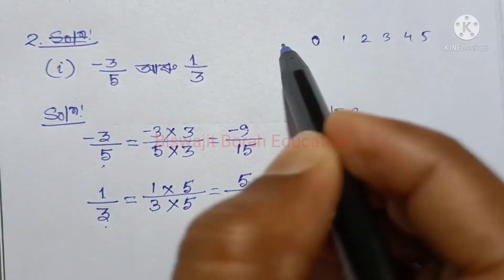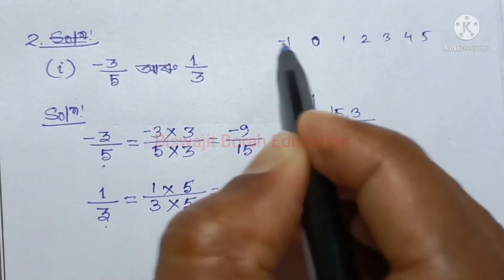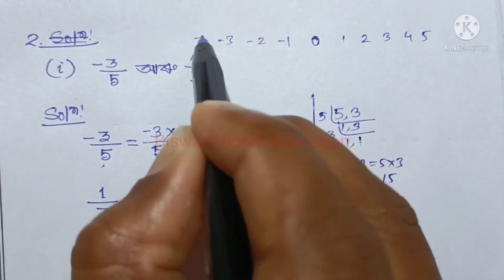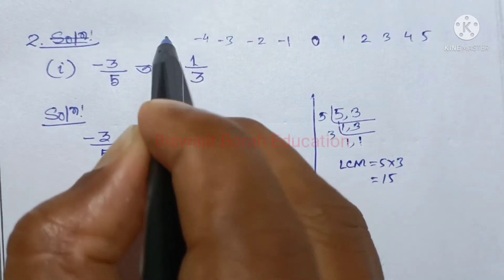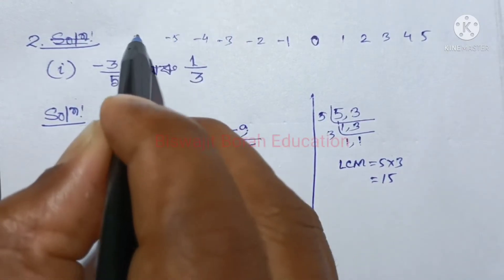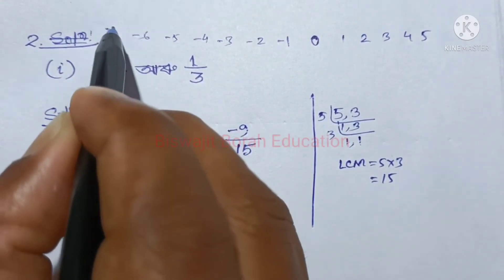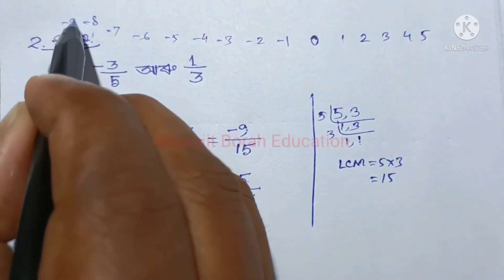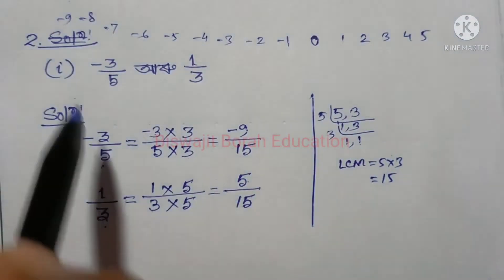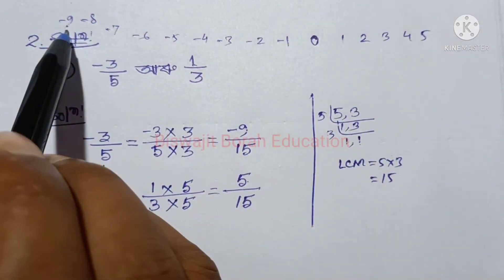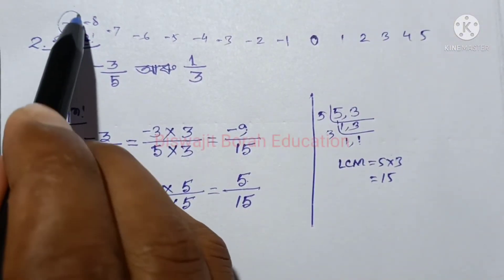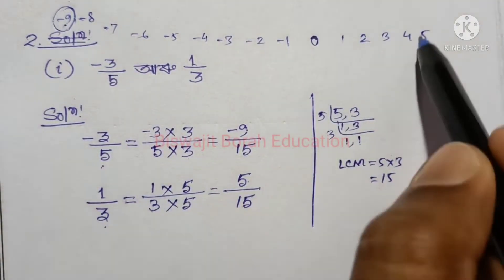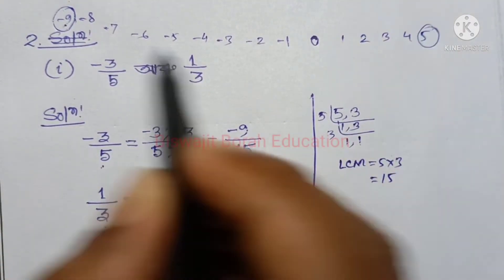So it's minus 1, minus 2, minus 3, minus 4, minus 5, minus 6, minus 7, minus 8, minus 9. So it's minus 9. Minus 9 is minus 5. So minus 9 is the manufacture box of fiber.